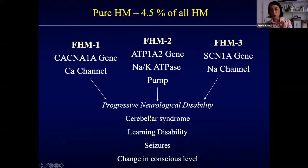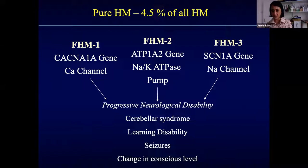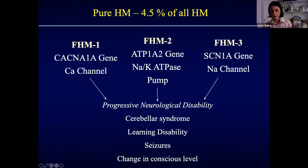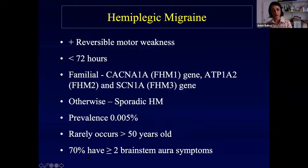There is pure FHM in about 4% of cases, and these patients develop a progressive neurological disorder — with each attack they're left with some disability. A cerebellar syndrome causes unsteadiness of walking and motor control. Some have learning disability or seizures. Curiously, some patients — with just a head movement or slight knock to the head — are rendered into coma. These are very rare disorders, but there is a proportion where it's progressive.